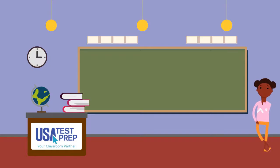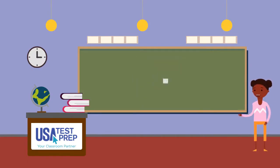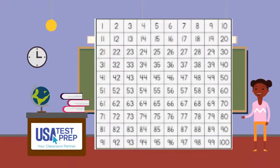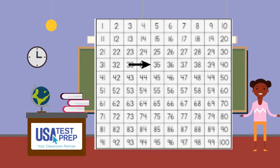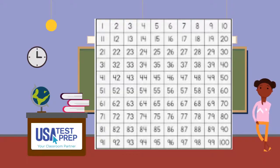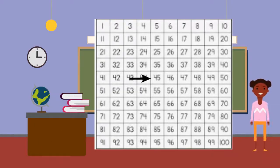We can use a 100 chart to help us visualize numbers. On a 100 chart, I know that if I pick a number, then the number directly below is 10 more. If I start with number 35, what is 10 more than 35? That's right, 10 more than 35 is 45.